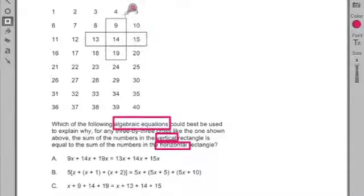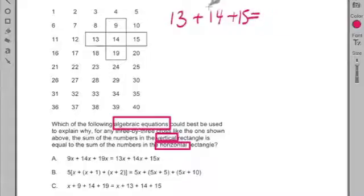And it's saying that the sum of the numbers in the rectangle boxes horizontal – I guess that would be 13 plus 14 plus 15 – is equal to the sum, this is the horizontal, is equal to the sum of the vertical. Let's see: 9 plus 14 plus 19. Now I would write that out so you can see it, and by writing it out you sort of make the connection. This is the horizontal, this is the vertical.